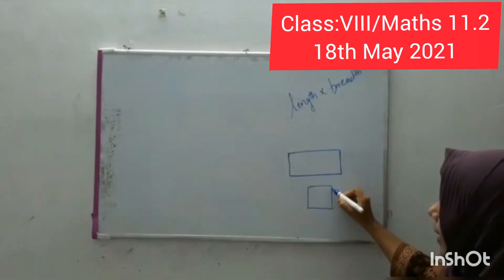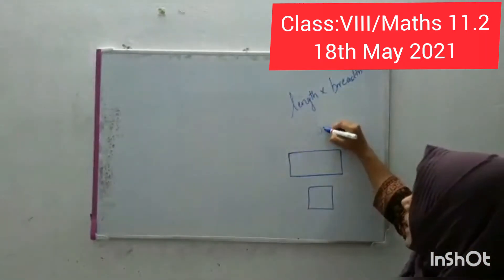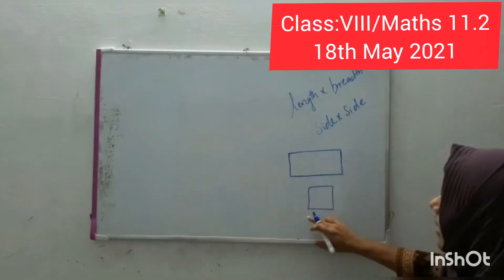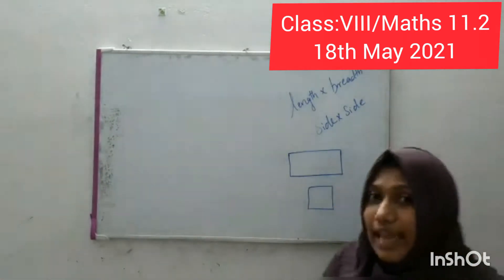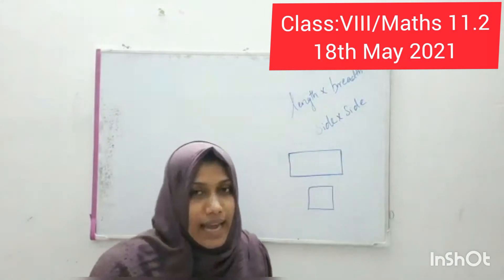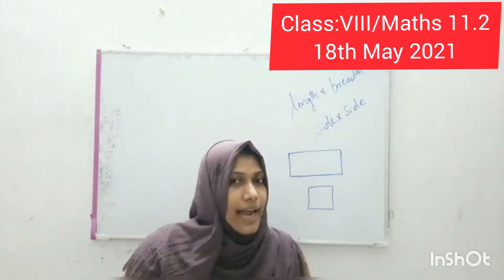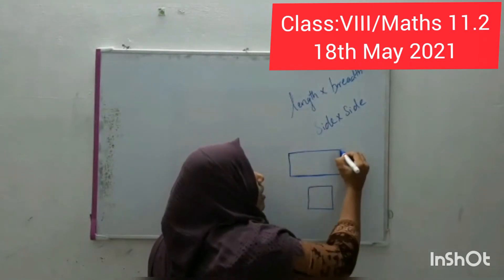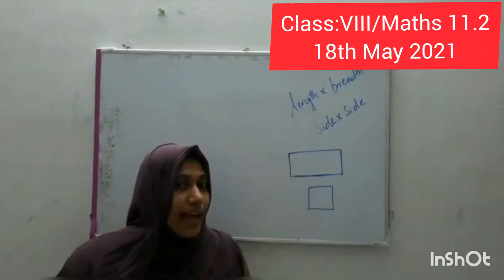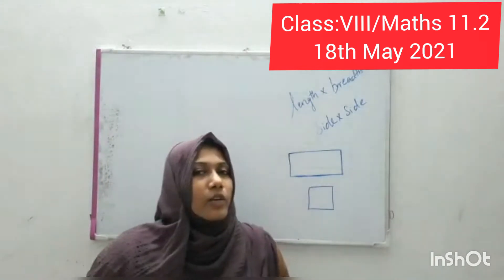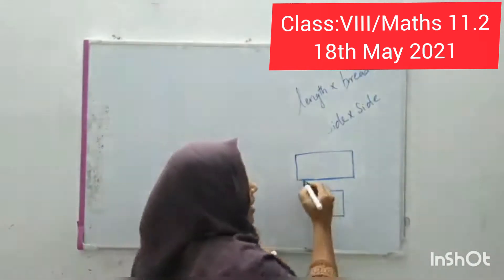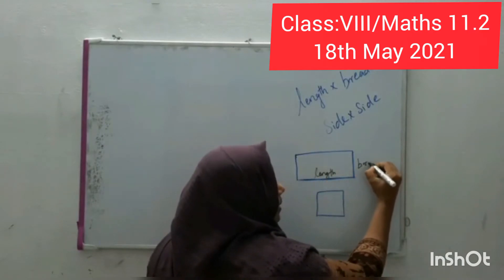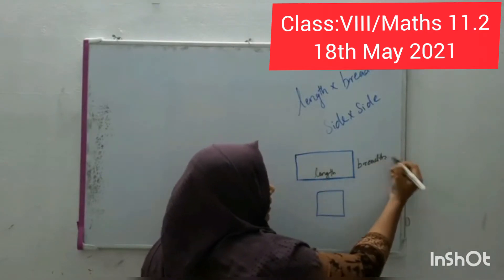For a square, its length and breadth are the same. So simply side into side — that is the length into breadth. The longest measurement is known as length, and the short one is breadth.